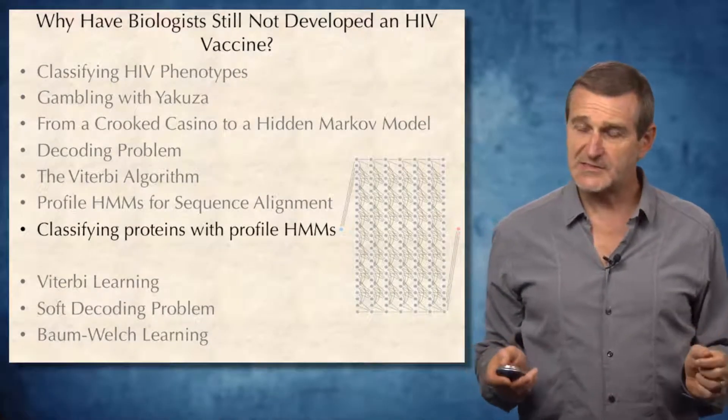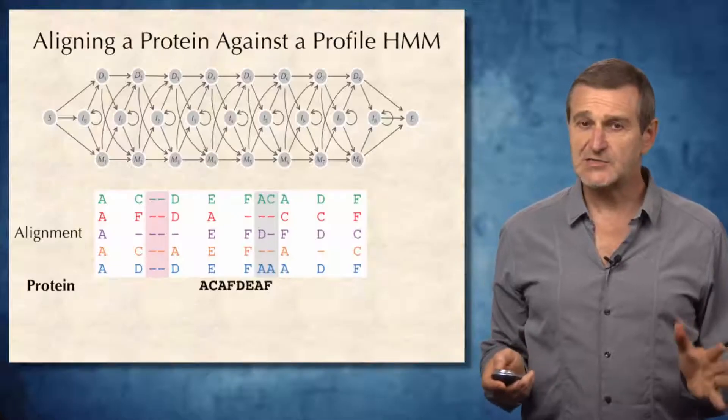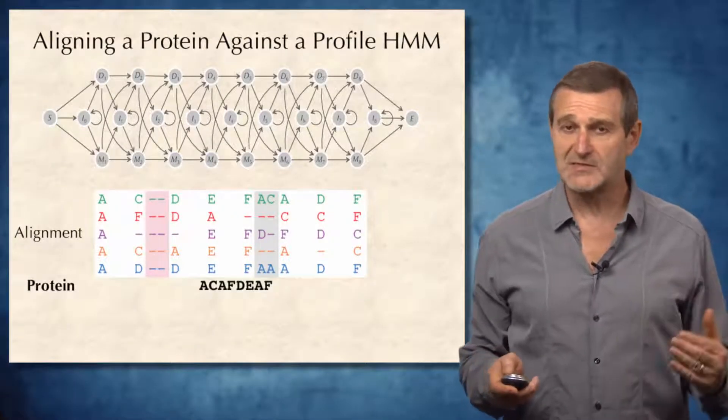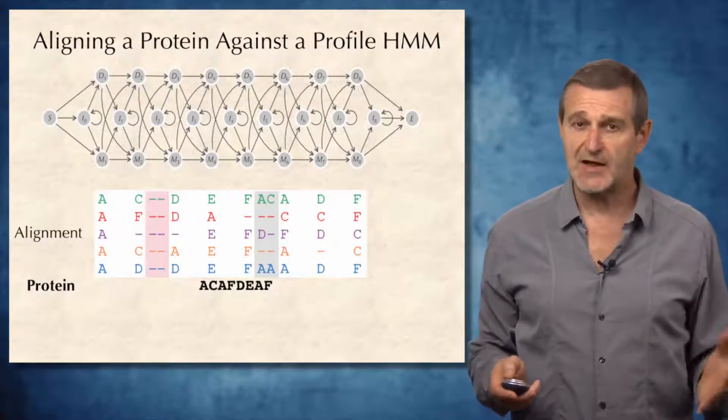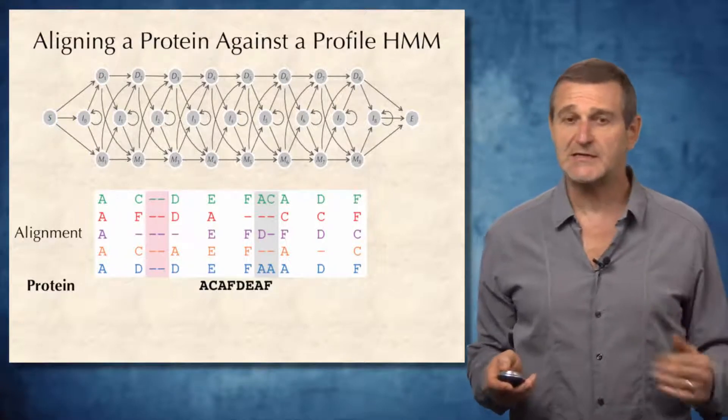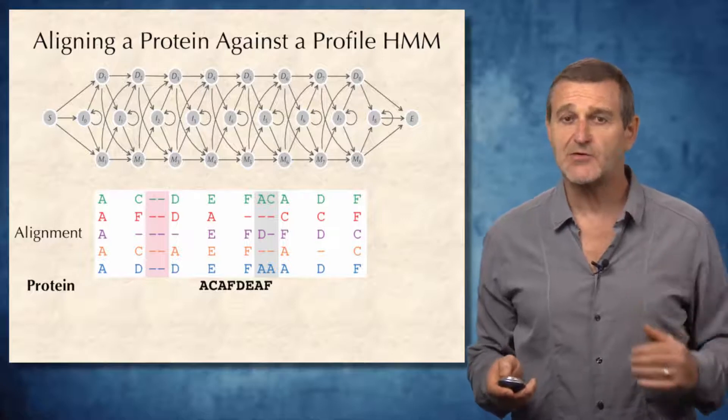We are now ready to classify proteins into families using hidden Markov models. Let's assume that we are given a multiple alignment of already known members of the protein family, and that we have constructed an HMM based on this family. And now a new protein comes in, and we want to decide whether it belongs to the given protein family.